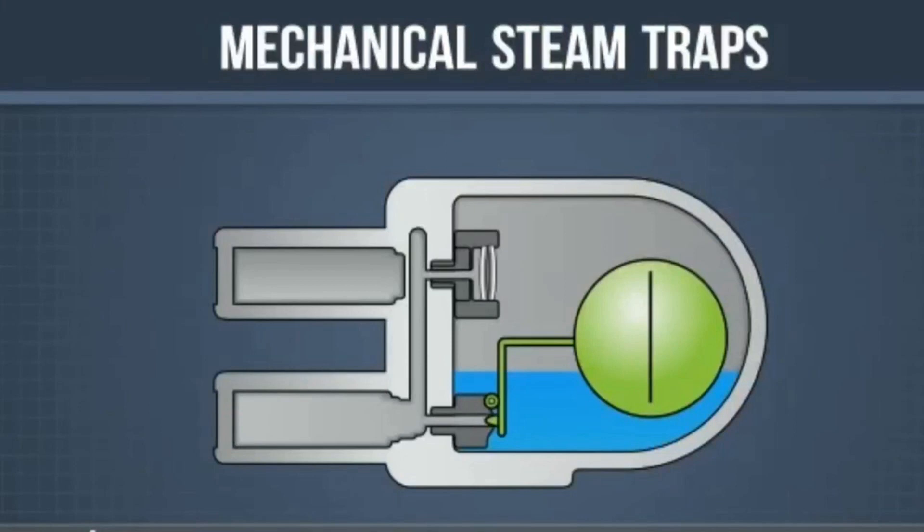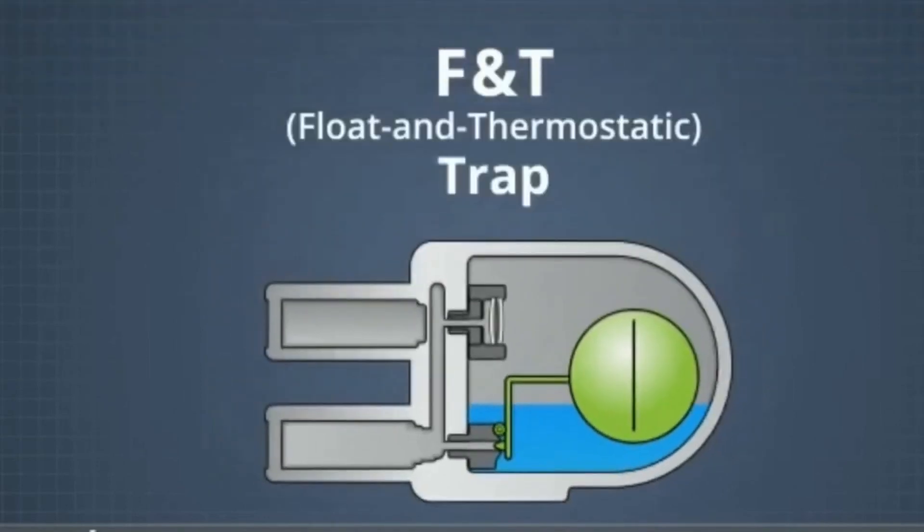Mechanical steam traps rely on the density difference between steam and condensate to operate. One common mechanical trap is called an F and T or float and thermostatic trap.